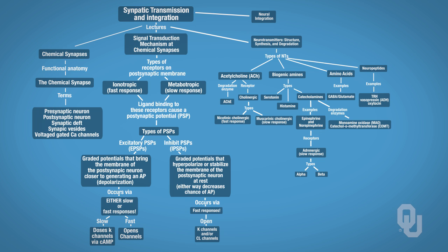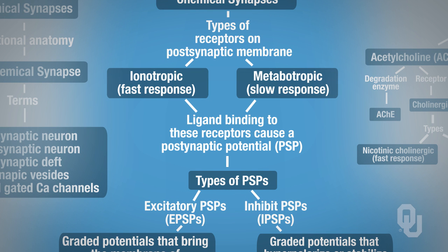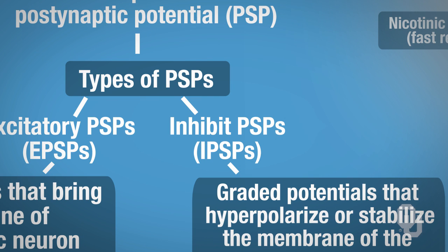This segment is on synaptic transmission and how a presynaptic neuron communicates with the postsynaptic neuron, and what happens when that ligand binds to the postsynaptic neuron. On our outline here, we're going to be focusing on this segment, which requires understanding what an ionotropic channel is and how they generate fast responses, and a metabotropic channel as they generate slow responses. This segment will focus specifically on the excitatory postsynaptic potentials, and we'll have a separate segment that focuses on the inhibitory postsynaptic potentials.